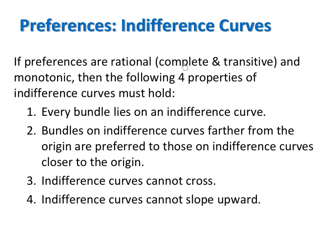If preferences are rational — meaning complete and transitive — and are also monotonic, then four properties of indifference curves must hold when drawing an indifference map. The first is that every bundle must lie on an indifference curve, due to the assumption of completeness, which says consumers can rank any two bundles of goods. The second property is that bundles on indifference curves farther from the origin are preferred to those on curves closer to the origin, due to monotonicity. If more is better, the further we move northeast from the origin, the higher the level of happiness.